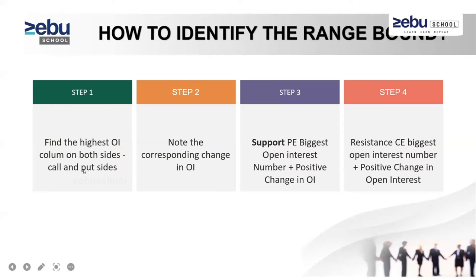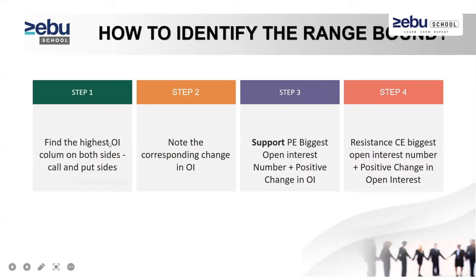Step one: find the highest open interest column on both sides — call side and put side. The entire option market has two directions: one is bullish and another is bearish. If the market is bullish, stay with the call option; if bearish, stay with the put option. Open interest changes play a vital role in the stock market.